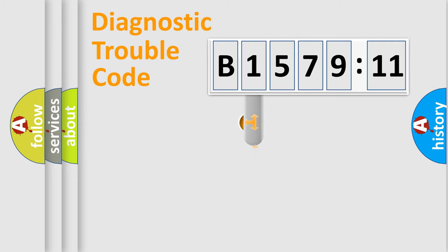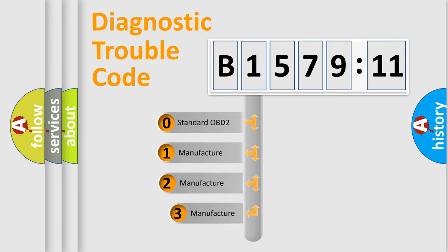Powertrain, body, chassis, network. This distribution is defined in the first character code.